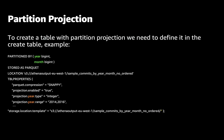To create a table with Partition Projection, we need to define it in the CREATE TABLE statement. For example, here I am creating a table with two partitions: year and month. In the properties, we define the type of the partitions — for example, year type integer — and the range of the partition, for example 2014 to 2016. As you can see, we define the range for the possible values for the partition column. We need to avoid the use of high cardinality ranges.